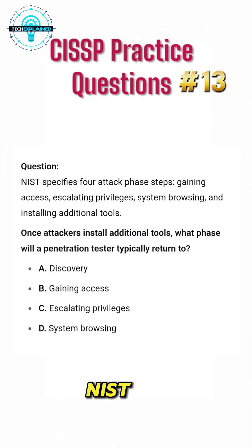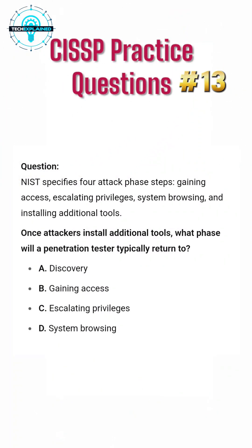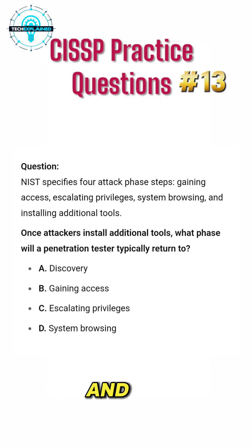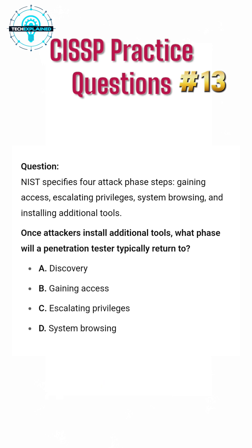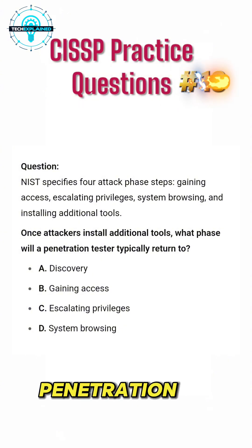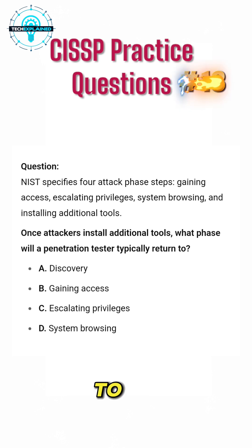Question. NIST specifies four attack phase steps: gaining access, escalating privileges, system browsing, and installing additional tools. Once attackers install additional tools, what phase will a penetration tester typically return to?